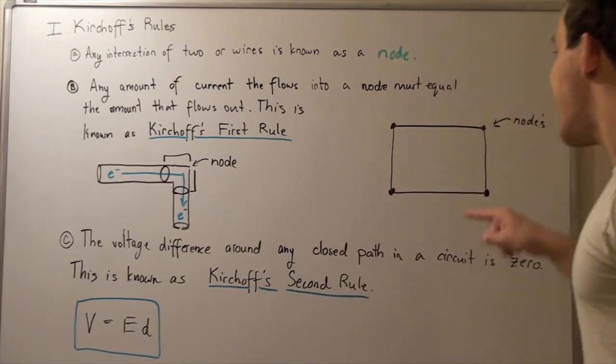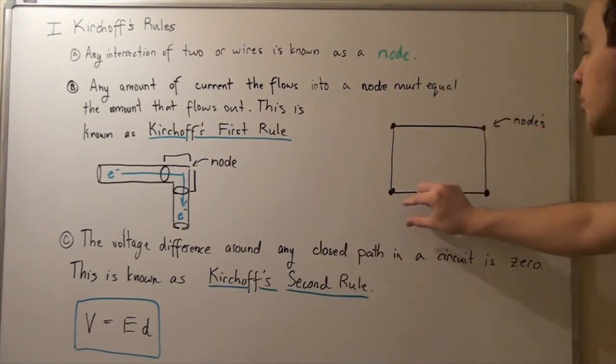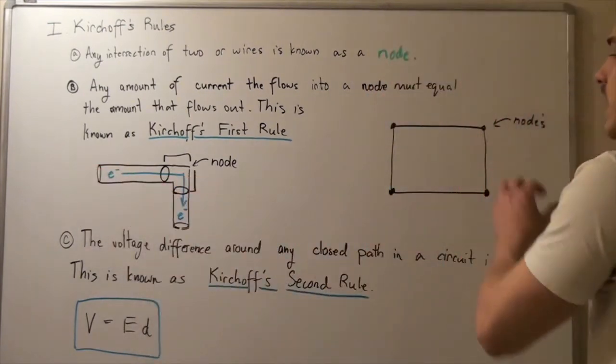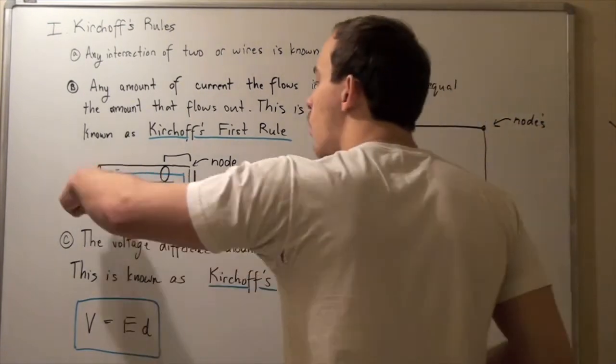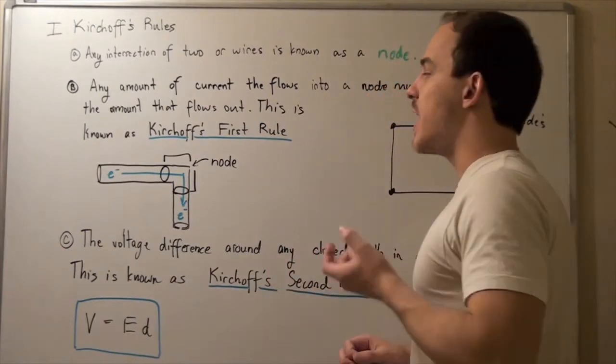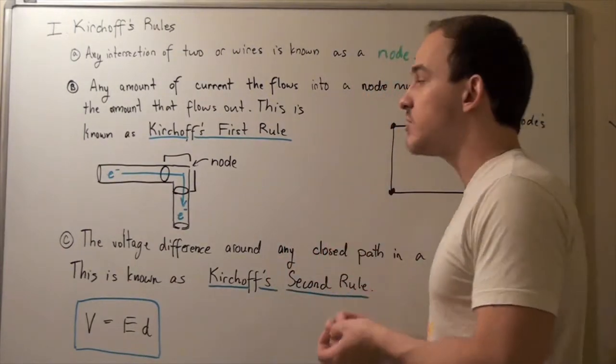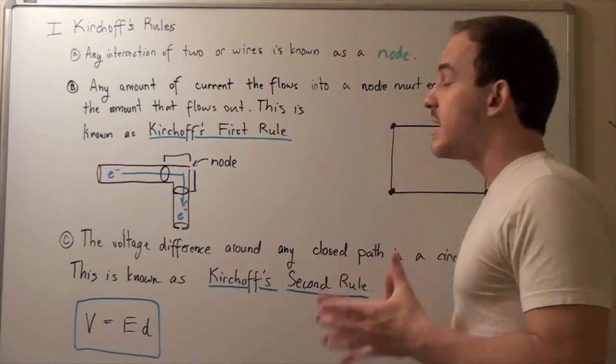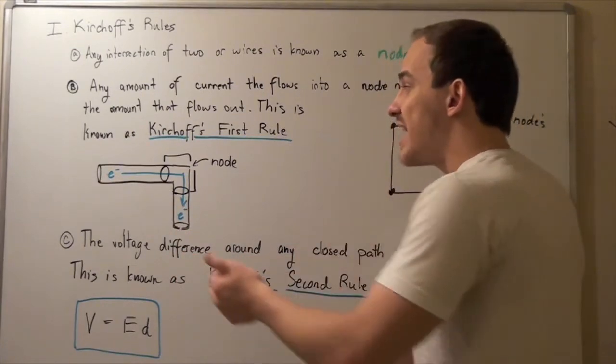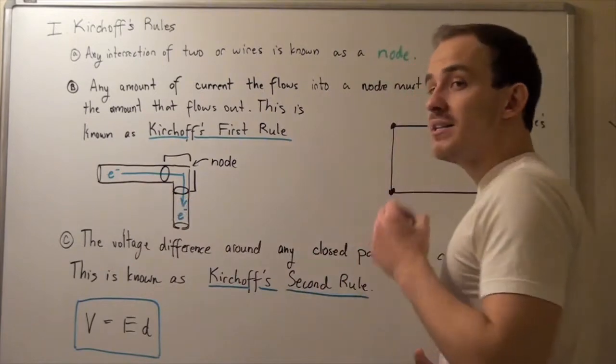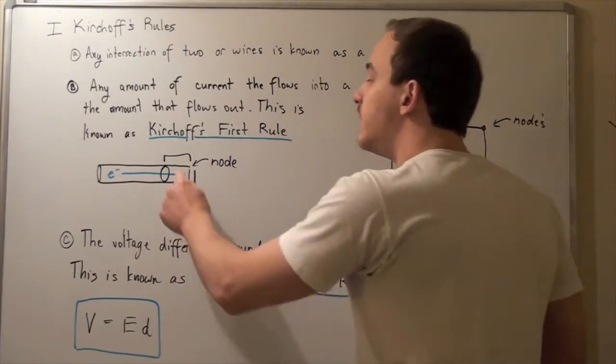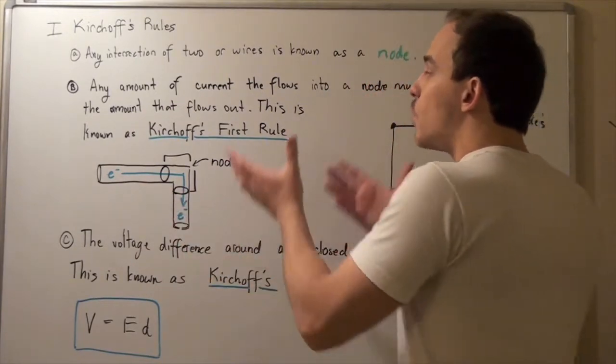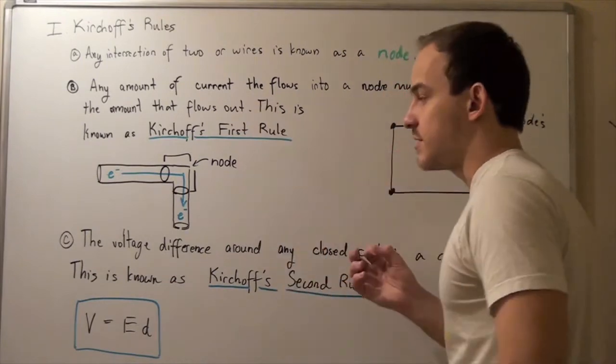If we take any section of the corner, we get the following picture. If we zoom in on our wire, our wire has some cross-sectional area A, and electrons travel from this end to this end. That means the amount of electrons that enter must be the same as the amount that leaves. And that's exactly what Kirchhoff's first rule tells us.